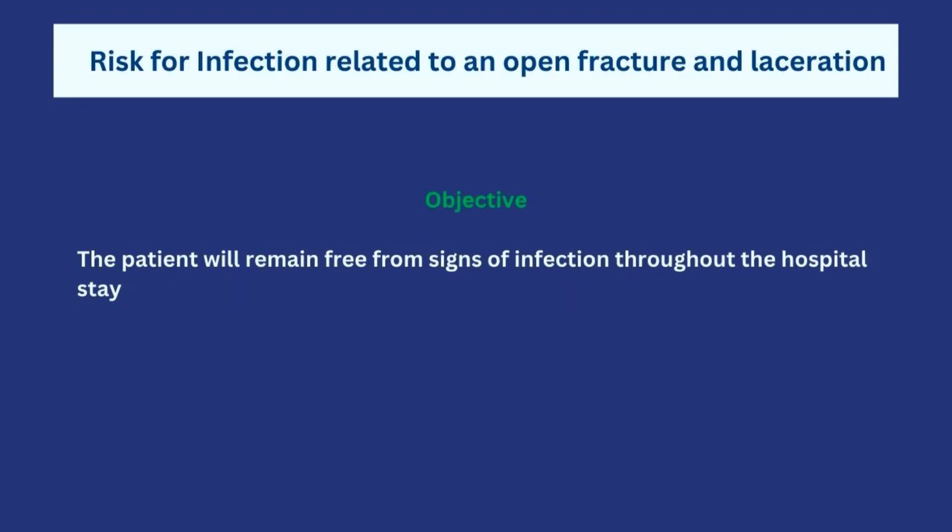Now let's go to the final diagnosis — risk for infection, which is a risk diagnosis, meaning it is something we are trying to prevent from happening. The scenario does not state that the patient has shown any signs of infection, but because there is a break in skin integrity, there is a risk. Our objective is that the patient will remain free from signs of infection throughout the hospital stay — this is a long-term objective covering the entire admission.